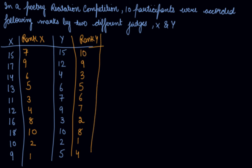Now, next up, what you will do? You will find out the difference between rank 1 and rank 2, rank of X series and rank of Y series. So, 7 minus 10 is minus 3. 9 minus 9 is 0. 6 minus 3 is 3. 5 minus 5 is 0. 3 minus 6 is minus 3. 4 minus 7 is minus 3. 8 minus 2 is 6. 10 minus 8 is 2. 2 minus 1 is 1. 1 minus 4 is minus 3.